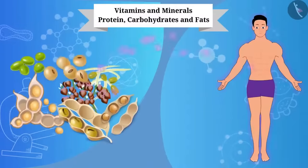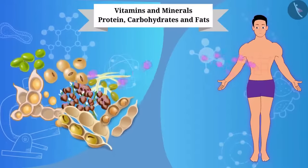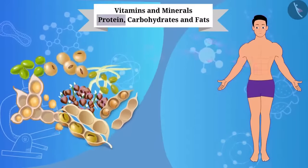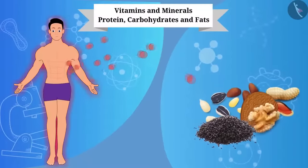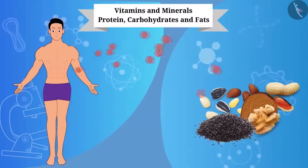Pulses like gram, pea, black gram provide protein. And soybean, groundnut, oil seeds, including sesame, provide essential fats.